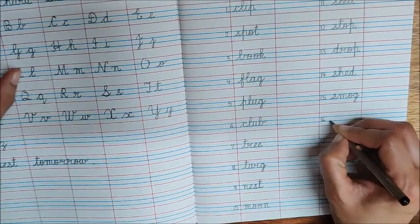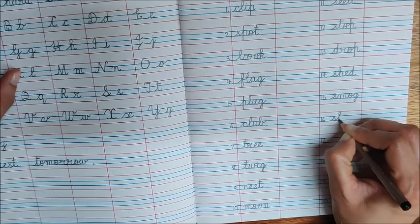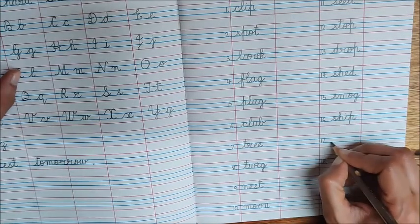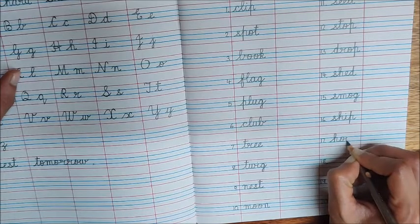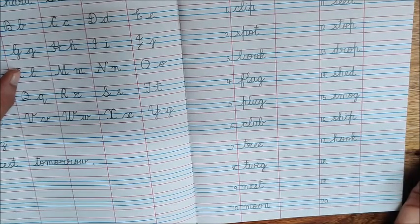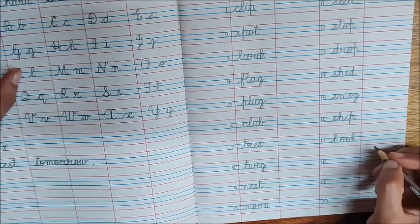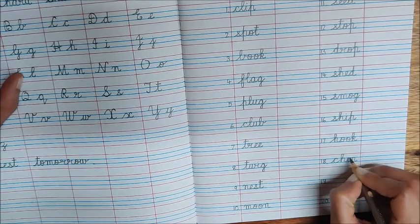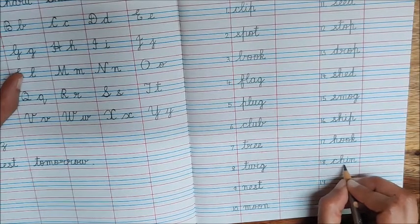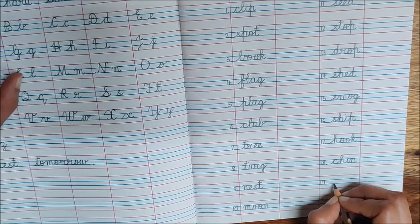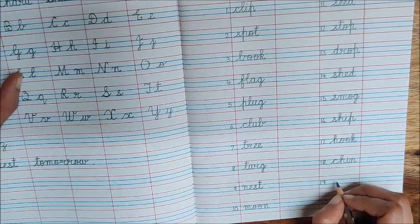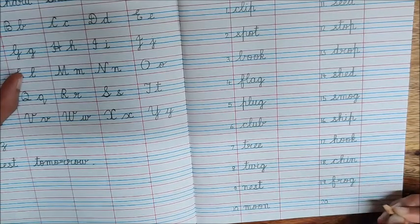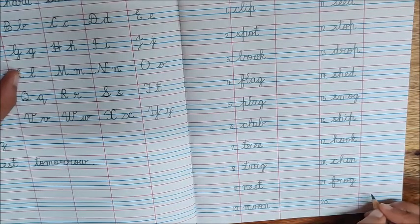Number sixteen is ship. Number seventeen is hook. Number eighteen is chin. This is cha. Number nineteen is frog. Fa, ra, o, ga - frog. Number twenty is glad.